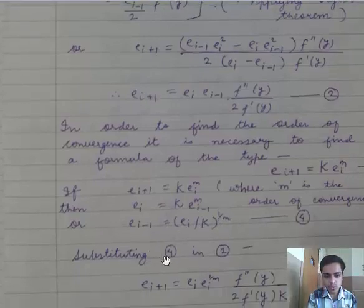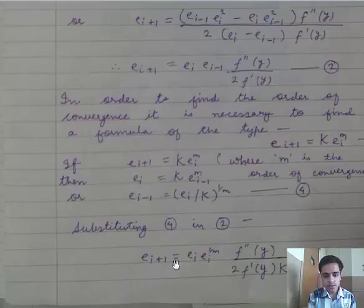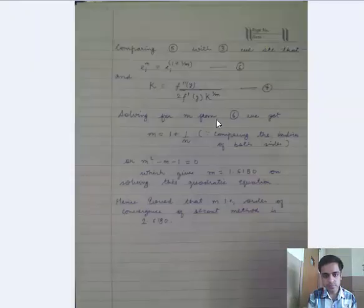Now substituting fourth equation in equation number 2, we will get the value of ei+1 equals ei times ei to the power 1/m times f''(y) divided by 2f'(y) multiplied by k to the power 1/m. This is our fifth equation.